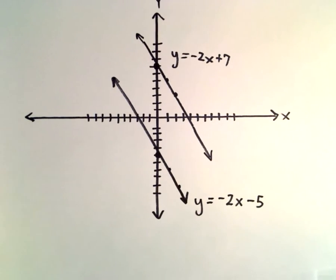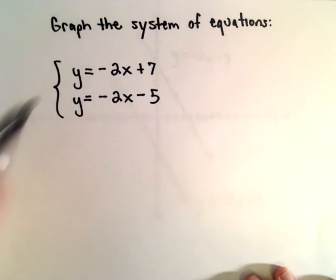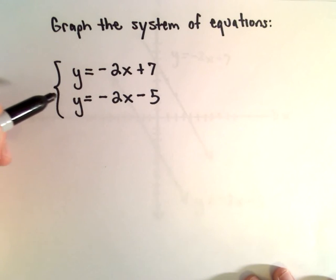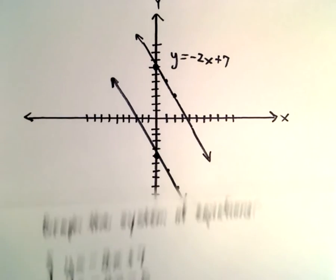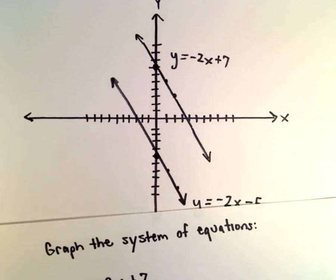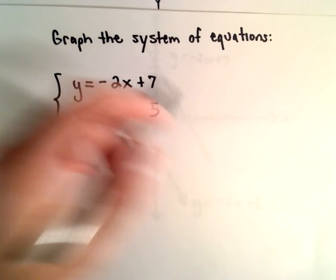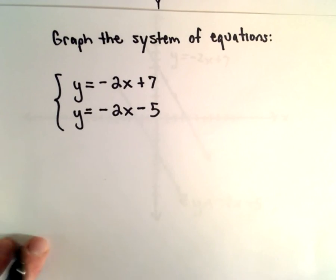The question doesn't ask this, but if we tried to find a solution to the system of equations, we could immediately say there are no solutions. We can deduce that from the graph. Since the lines never intersect, there's no solution to our original system.